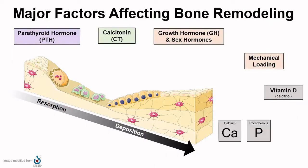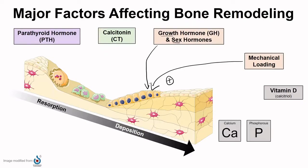Aside from mechanical stresses and strains, which ultimately lead to new bone deposition, many extrinsic factors also affect the functioning bone cells. During growth spurts and puberty, sex hormones and growth hormones are much more prevalent and play a big role in the growth of bones. In general, their presence will lead to an increase in bone deposition.